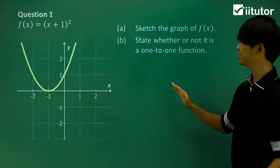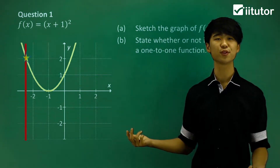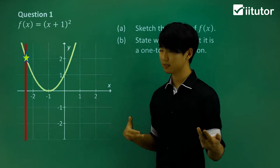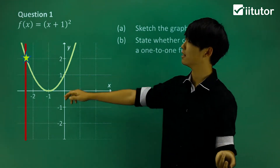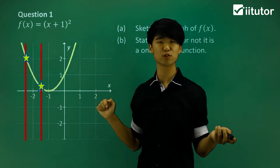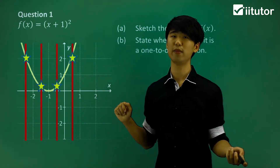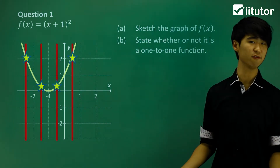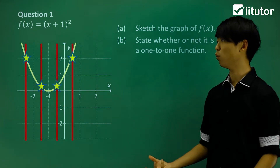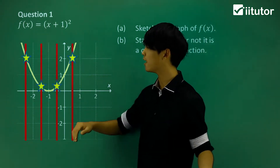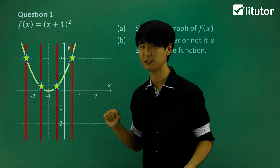In part b, it's asking whether or not it is a one-to-one function. To test this, I'll look at different x values in the domain and see how many y values I get. Drawing lines across the graph, I can see that for one x value I get a y value, and for another x value I get the same y value. A one-to-one function requires one x value corresponding to just one y value, but here I have one y value corresponding to two x values.